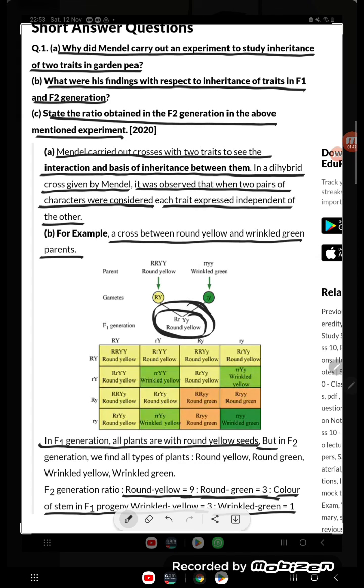wrinkled yellow, and wrinkled green—all are formed. So this is the answer, students. This question was asked in the 2020 exam. Thank you so much for watching.